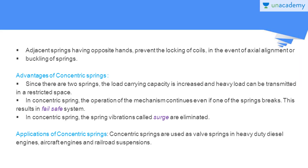Adjacent springs having opposite hands prevent the locking of the coils in the event of axial misalignment and buckling of springs. Keeping the two springs of a concentric spring with opposite hands prevents locking of coils, and they apply resistive forces to prevent axial misalignment or buckling of springs.